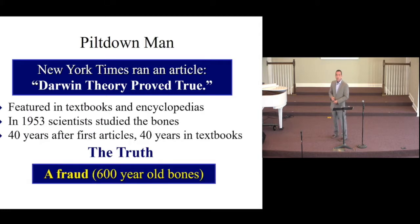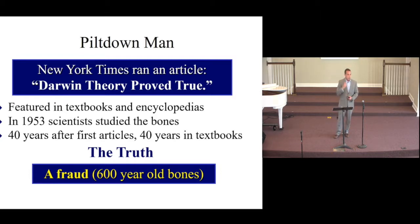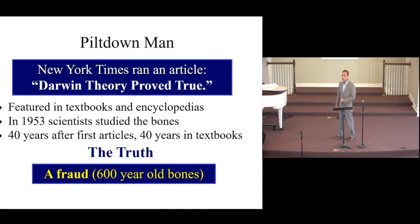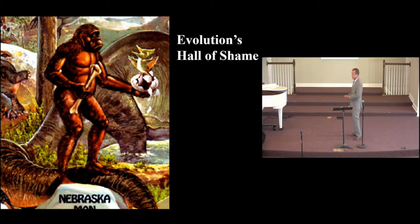Further research uncovered that Charles Dawson had executed a fraud. He had taken a skullcap and stained it to give it age, taken an orangutan jaw and stained it to give it age, filed the teeth to make them look more human-like, buried it in the dirt, then 'found' it and heralded a 500,000-year-old man. The truth: the skullcap was 600 years old, and the orangutan jaw was modern — a complete fraud. Thus Piltdown Man enters evolution's hall of shame.